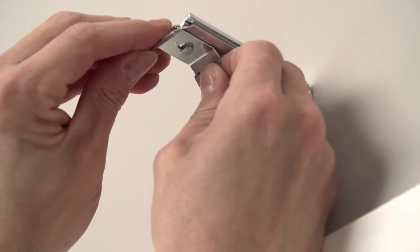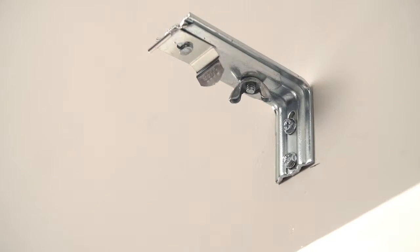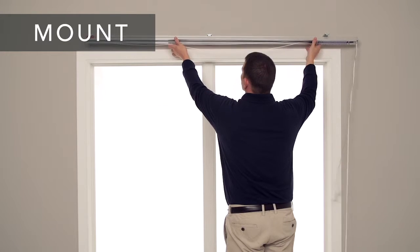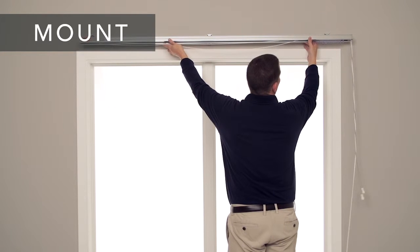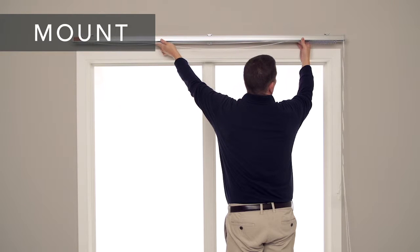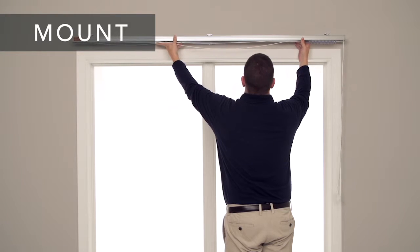Make sure the clips on the headrail brackets are in the open position. With the wand and vane clips on the side of your choice, snap the headrail in place by inserting the front edge in the mounting clips and rotating it back.